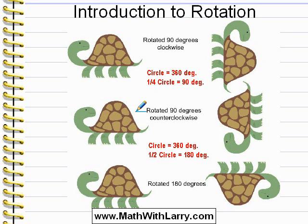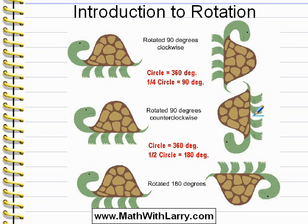Let's take a look at the second drawing here. The drawing starts out in the same way, but here what we did was we rotated it 90 degrees counterclockwise. It's one quarter of a circle, but it was rotated opposite the way the hands of a clock move. Take a look at that and make sure that you see how that works.